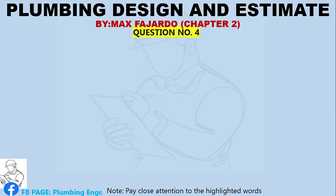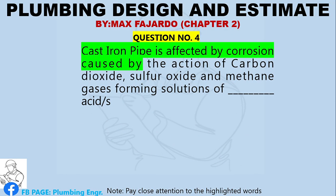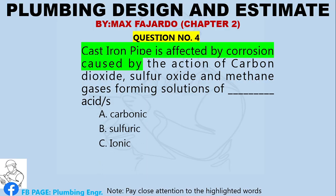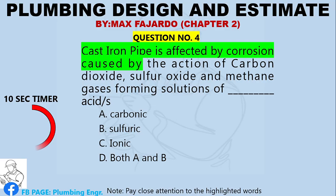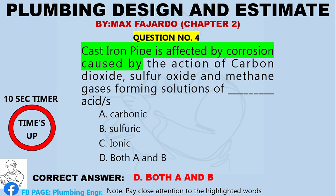Question Number 4. Cast iron pipe is affected by corrosion caused by the action of carbon dioxide, sulfur oxide, and methane gases forming solutions of blank acid or acids. A. Carbonic. B. Sulfuric. C. Ionic. D. Both A and B. Correct answer: Letter D, both A and B.